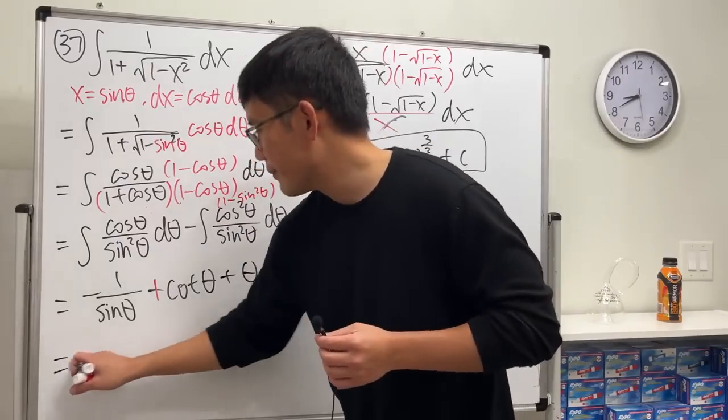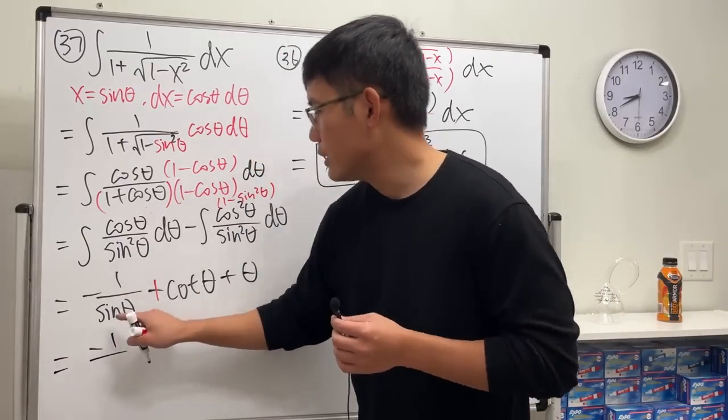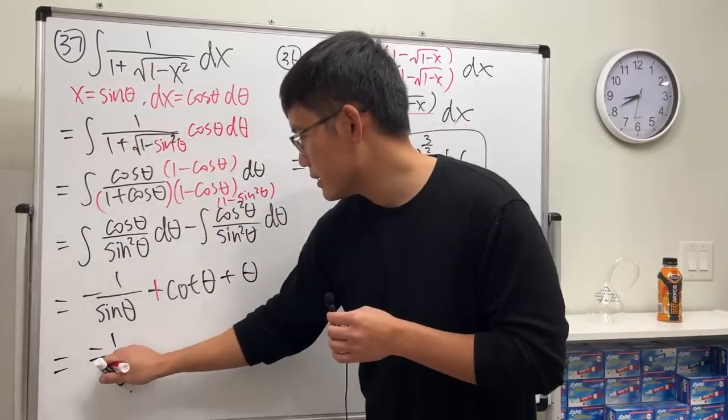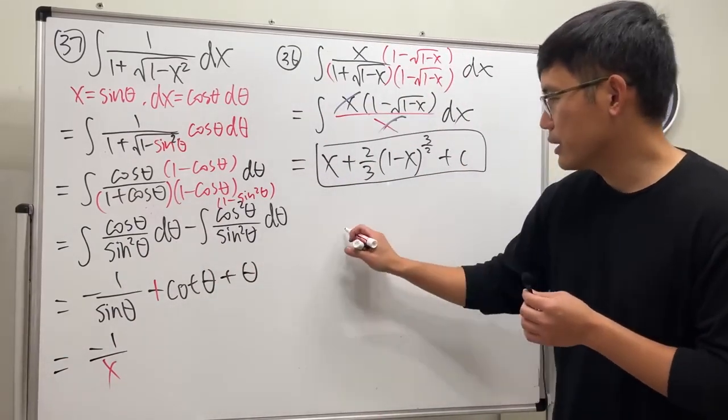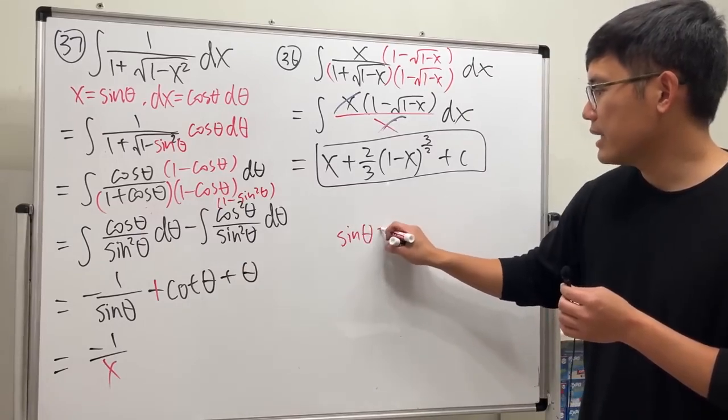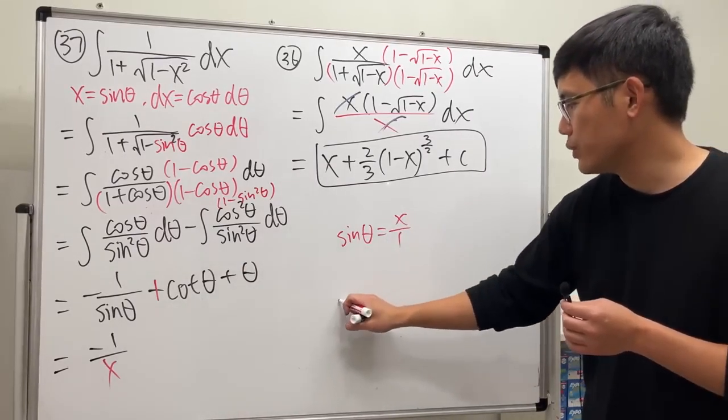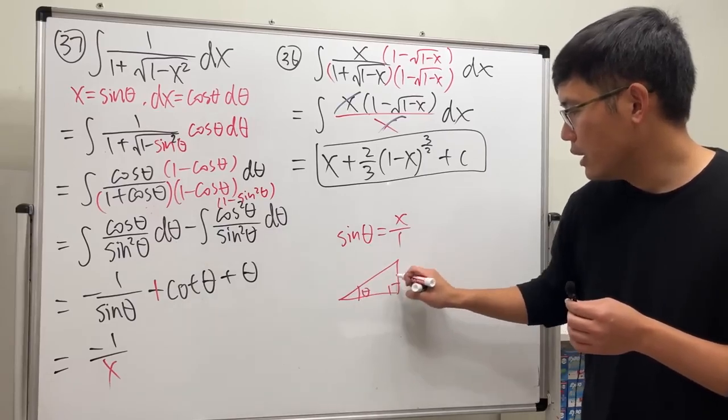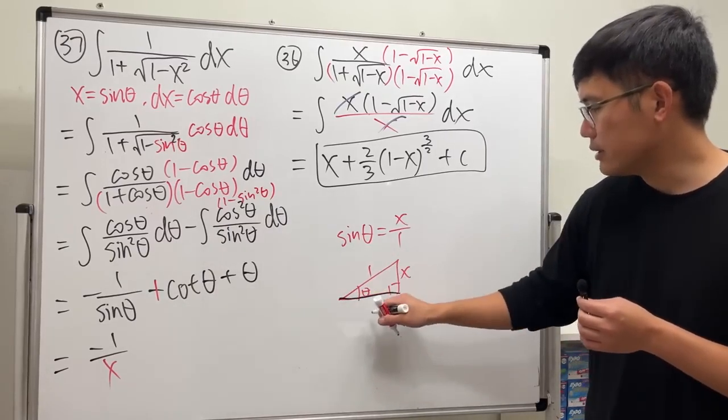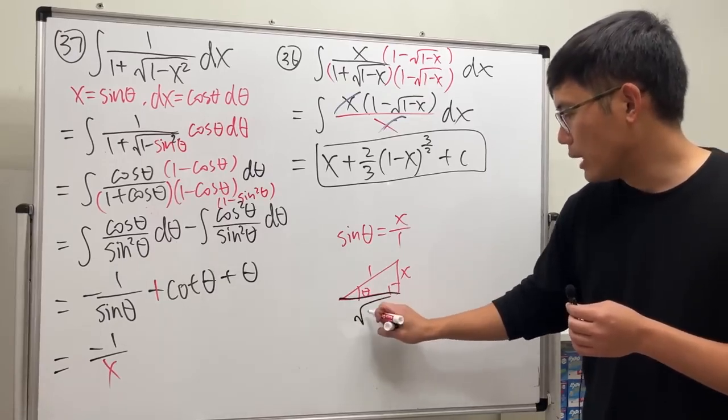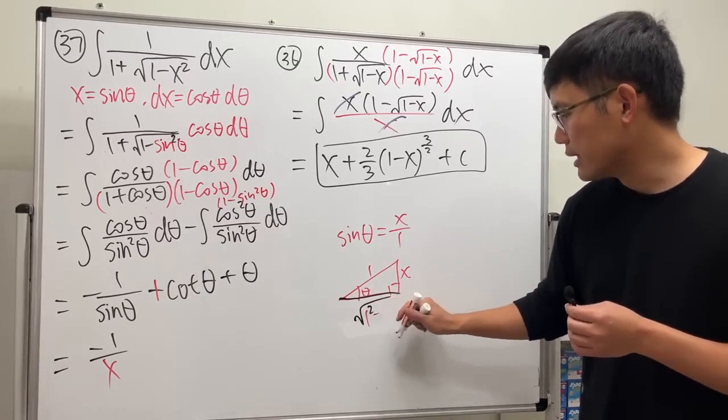Let's see, just put everything back. Negative one over sine theta is x. What's cotangent theta though? Let's draw a triangle real quick. Sine theta equals x over one, which we know a triangle: x over one, hypotenuse is right here, and this is adjacent, is square root of hypotenuse square minus the other side square.